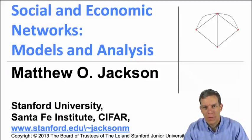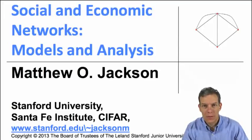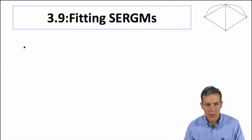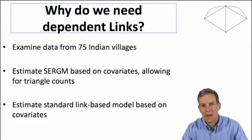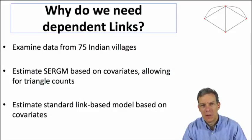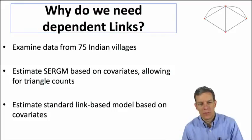Let's talk about the importance of fitting subgraphs and different structures in exponential random graph models, and why that's part of the generation process that is important to capture. The idea is to look at why we actually want to use these kinds of models rather than just estimating links directly based on their characteristics.